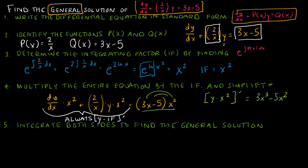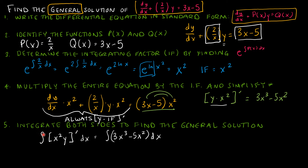Then I'm going to integrate each side. On the left side, I integrate the derivative of (x squared y) with respect to x, and on the right side, I integrate 3x cubed minus 5x squared dx. On the left, the integral and derivative cancel, leaving x squared y. On the right, that gives 3x to the fourth over 4 minus 5x cubed over 3 plus c.